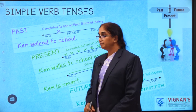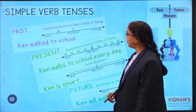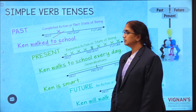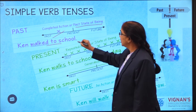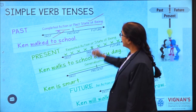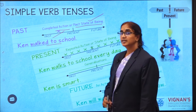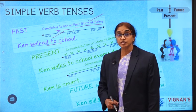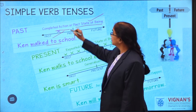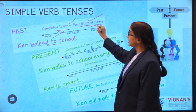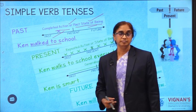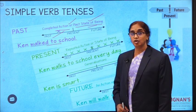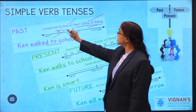Look at this usage of simple past tense. 'Ken walked to school.' Here we are referring simply to the completion of an action in the past — it is a completed action or a state of being. Another sentence: 'Ken was a student of George High School.' What does it mean? That he is no longer a student there. So completed action in the past, or it was a state of being in the past. 'Ken was a very bright boy in school' — we don't know about his college performance.